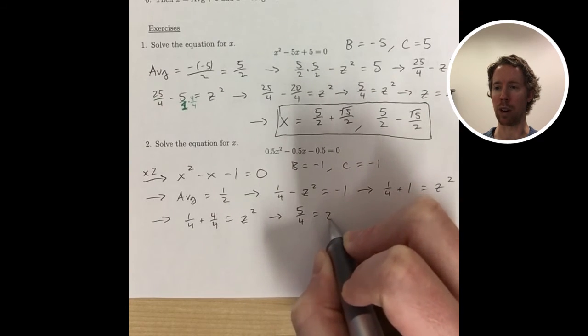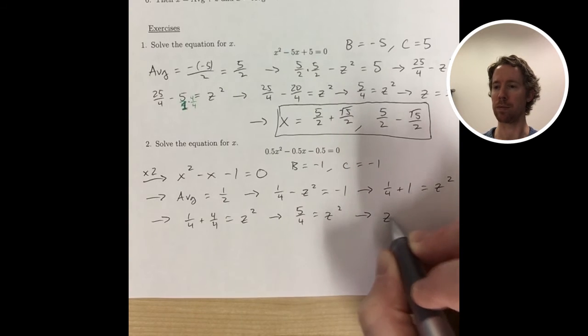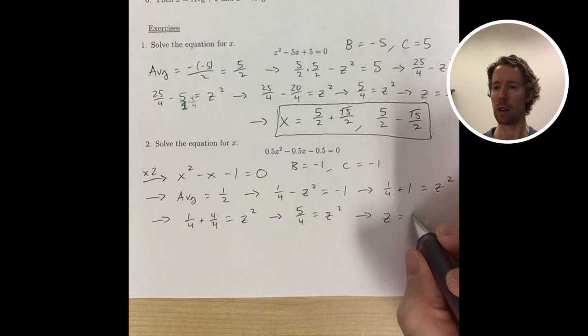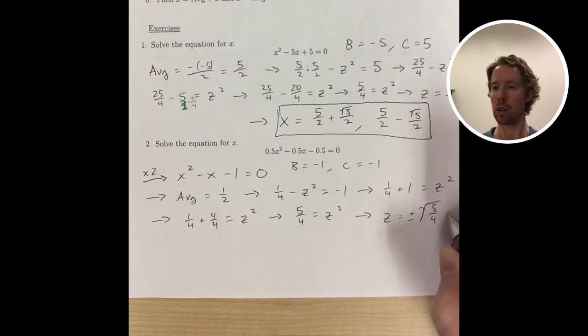Then you combine those fractions, take the square root of both sides. And we know the square root of 4 is 2, so we can simplify it a little bit.